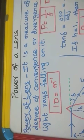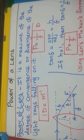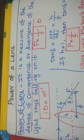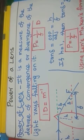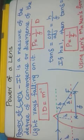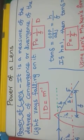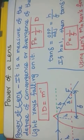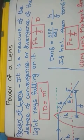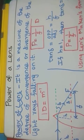Power of a lens. The power of a lens is a measure of the degree of convergence or the degree of divergence of the light rays that fall on it. That means when the light falls on the lens, how much degree it will be bent towards or bent outwards.